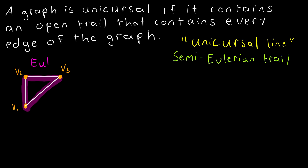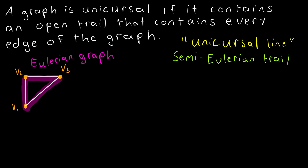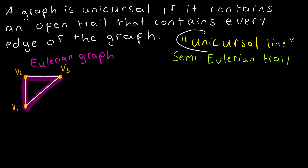A graph that contains an Eulerian circuit is of course called an Eulerian graph. The only difference between an Eulerian circuit and a unicursal line — which is also sometimes called a semi-Eulerian trail — is that an Eulerian circuit is closed, starting and ending at the same vertex, whereas a unicursal line is open, starting and ending at distinct vertices. But they both contain every edge of the graph.